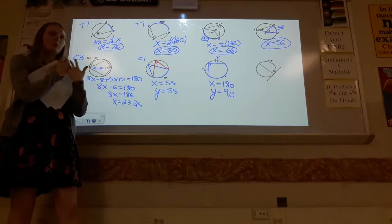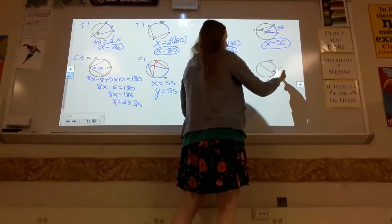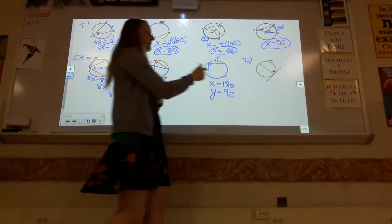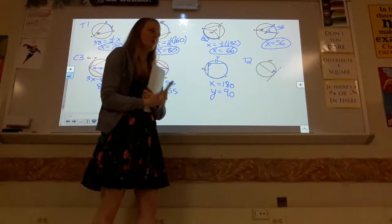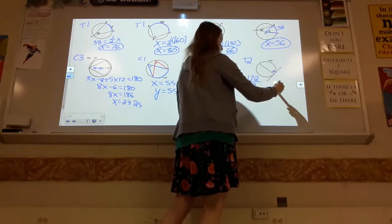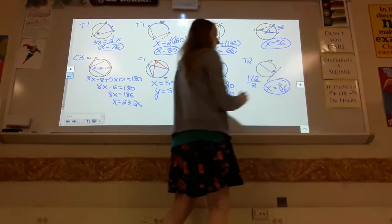This problem combines ideas from multiple days — the chords-equal-arcs theorem with the inscribed angle theorem. The last example uses Theorem 2: a tangent and a chord create an angle. The arc is 172, so divide by 2 to get the angle x equals 86. The relationship is the same as for inscribed angles.